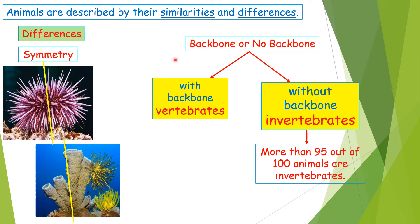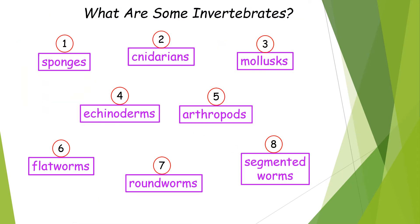Now let's check the other difference: whether animals have a backbone or no backbone. Animals that have a backbone we call vertebrates, whereas animals that do not have a backbone we call invertebrates. That's what our lesson is going to be about. We have to know that more than 95 out of 100 animals are invertebrates — can you imagine how many invertebrates there are?